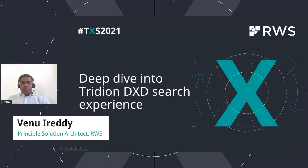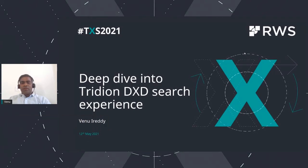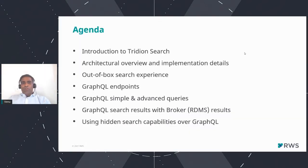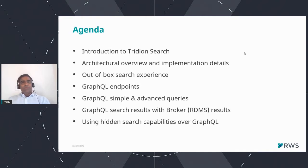Let's get into my session, which is basically about what we have in search when we install the Tridion BXT. The agenda is to introduce what Tridion Search is — this was introduced in version 9.5 and will be further enhanced in future releases. This initial version supports Tridion search on both Tridion Sites and Docs. We're going to talk about what Tridion Search is, give an overview of the architecture, and how you can implement search when building search queries.